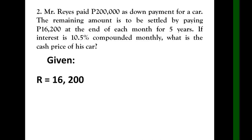To solve for the principal, write the given: R is 16,200, that's the periodic payment every month. i equals 10.5% or 0.105, m is 12 because it's compounded monthly, and t equals 5, which is 5 years.